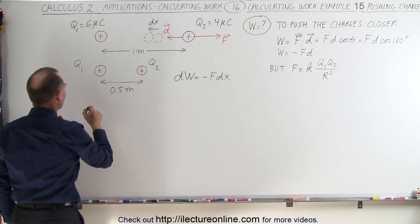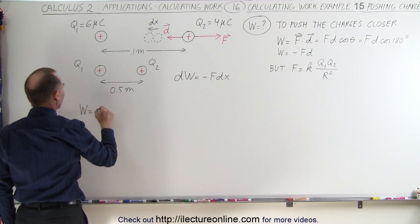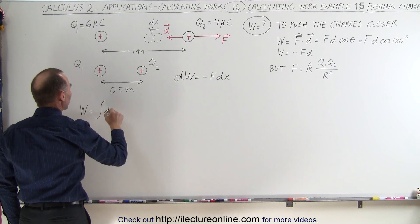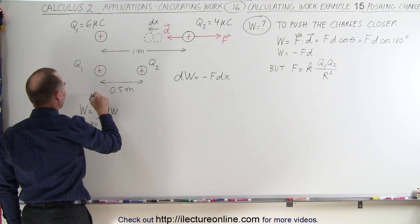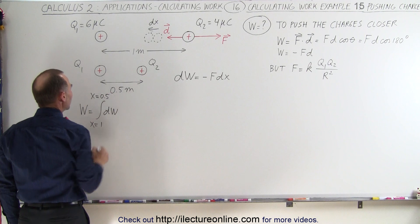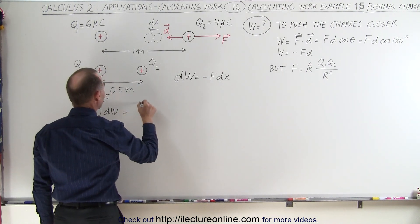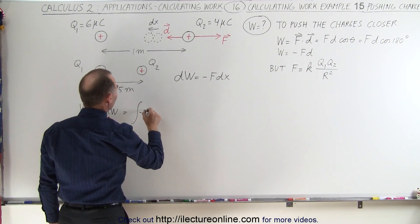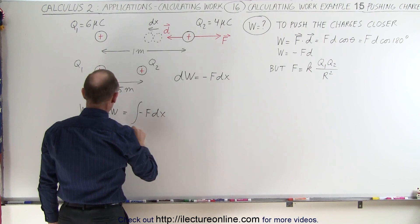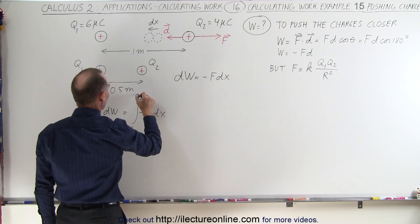So continuing that, we can say that the total work done is equal to the integral of the dw's going from x equal 1 to x equals 0.5 meters. And so this is equal to the integral of minus f dx from 1 to 0.5.